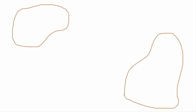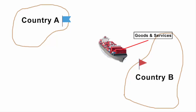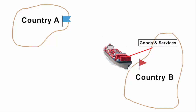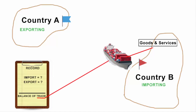Balance of trade records the volume of goods and services imported as well as exported by a country to other countries. It is basically a record which keeps track of trade between two countries, and by trade we mean both export and import of goods and services.